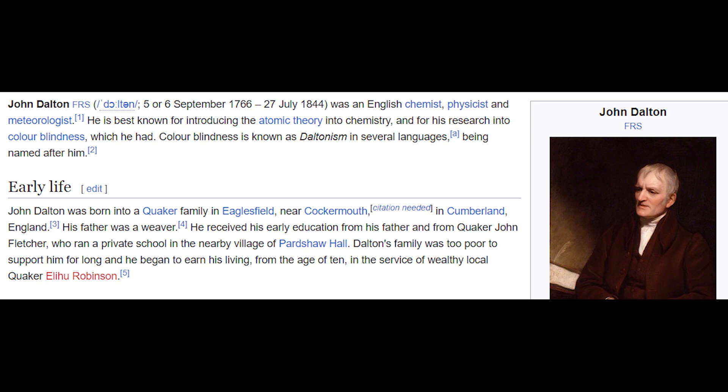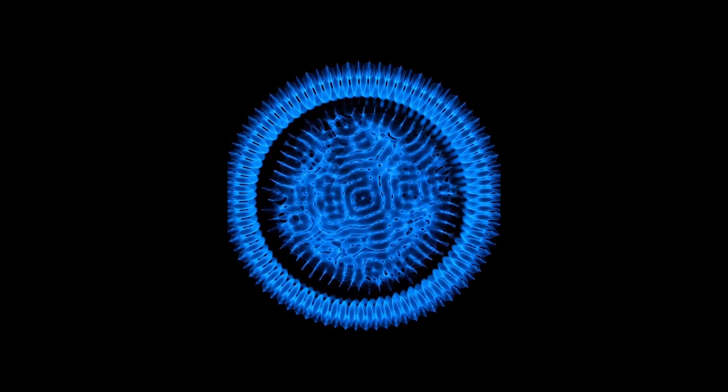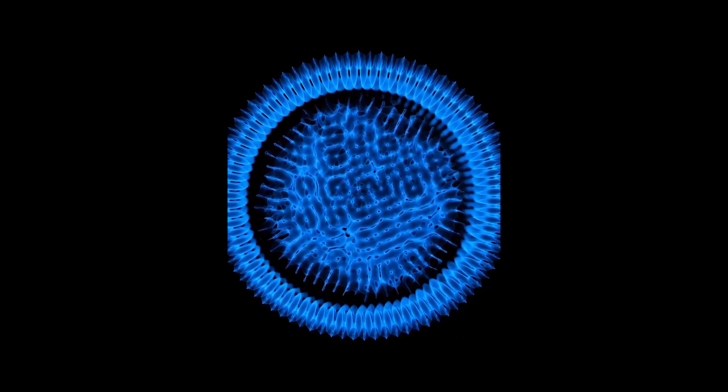Let's begin from 1803. John Dalton, an English chemist, proposed his atomic theory which stated that all matter is made up of tiny indivisible particles called atoms. He also suggested that atoms of different elements have different weights and combine in simple ratios to form compounds.